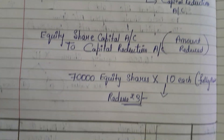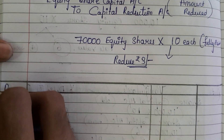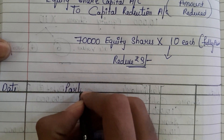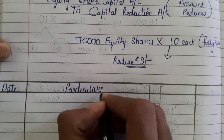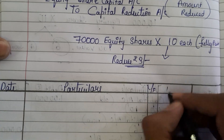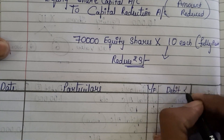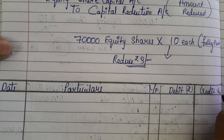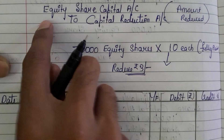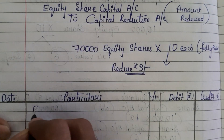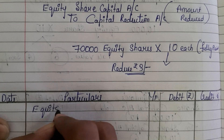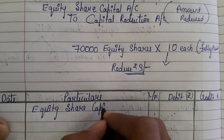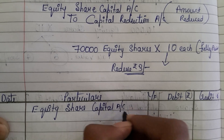Let us see how to pass the journal entry. The format is very important: Date, Particulars, Ledger Folio, Debit amount, Credit amount. As we have seen above, the journal entry is: Equity Share Capital Account — debit. Total 70,000 equity shares and rupees 3 they are reducing.